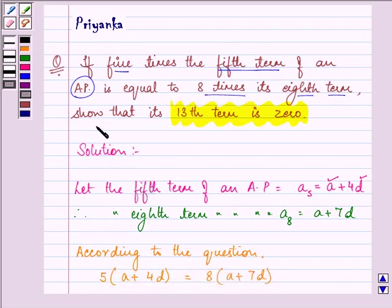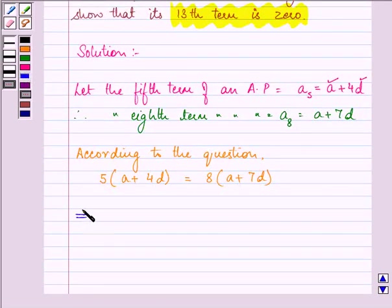Then we need to show that the 13th term is 0. So let us open the brackets. We have 5A plus 20D is equal to 8A plus 56D.